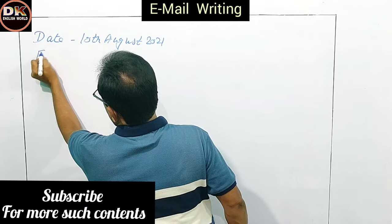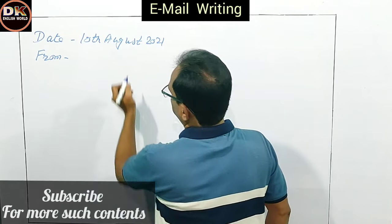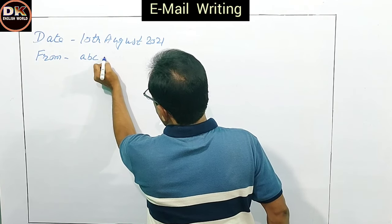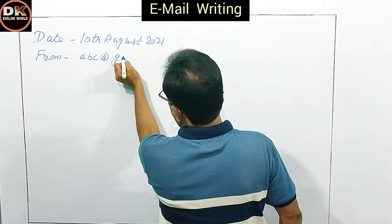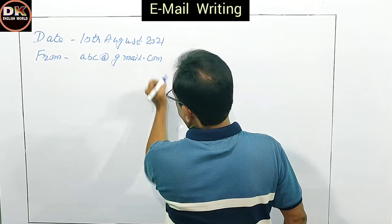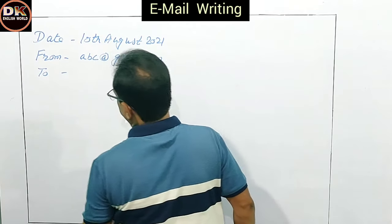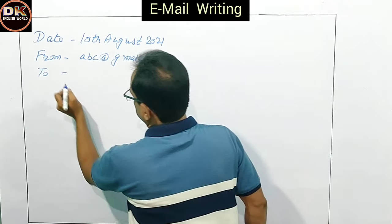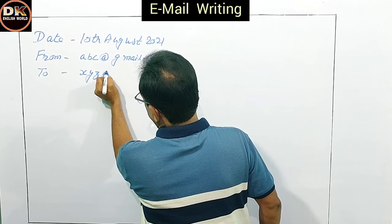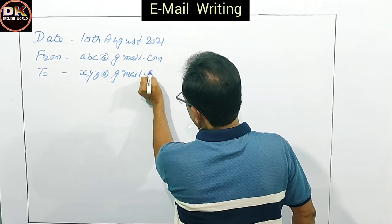And then you write From — sender's email id. I have written, suppose, sender's email id: ABC at the rate Gmail dot com. Then you write To — which exactly the email is sent to. Suppose they have email id: XYZ at the rate Gmail dot com.